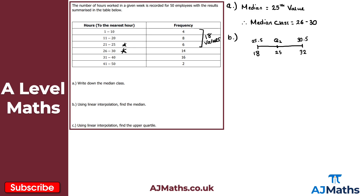Now we form equations using proportion. We consider the distance from 25.5 to Q2: (Q2 − 25.5) divided by (30.5 − 25.5). We set this equal to the same ratio using frequencies: (25 − 18) divided by (32 − 18). This gives us our interpolation equation to solve for Q2, the median.